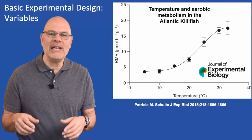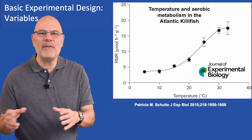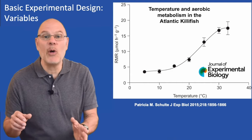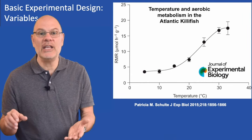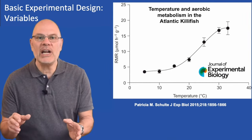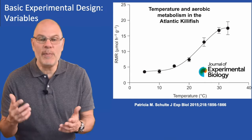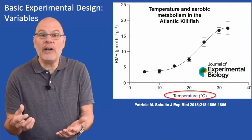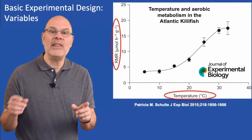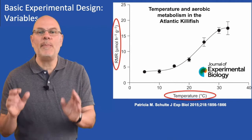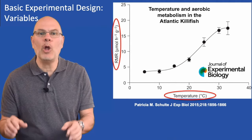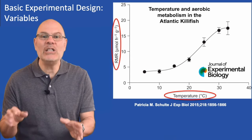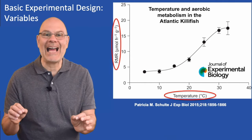Here's data from a study that measured the effect of temperature on respiration in a small species of fish that lives in the Atlantic Ocean. In this study, the independent variable is temperature. The dependent variable is the amount of oxygen that the fish consumes. The dependent variable always goes on the y-axis, and the independent variable goes on the x-axis.